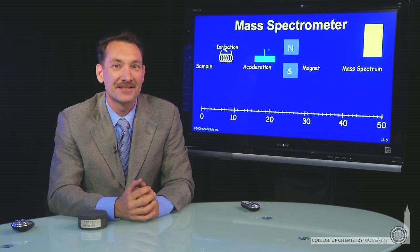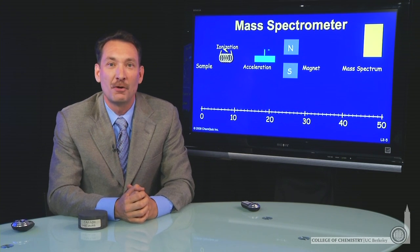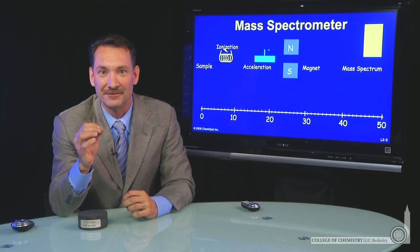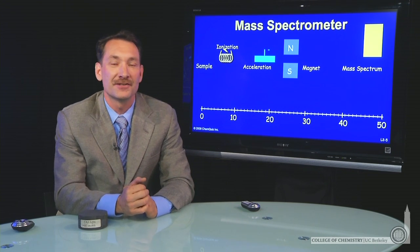So how do we determine the exact mass of an atom? Well, one way is to use a mass spectrometer. That's an instrument that's extremely sensitive to mass. And here's how it works.